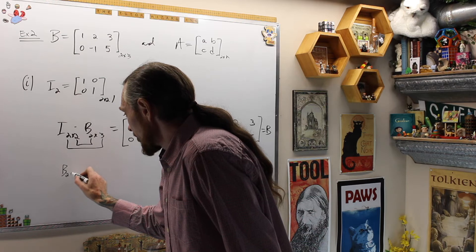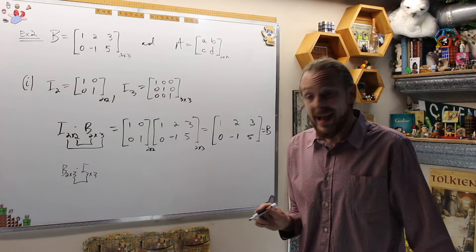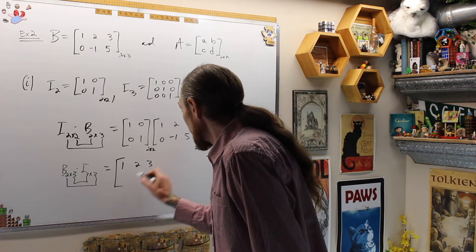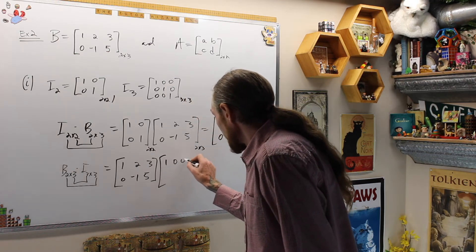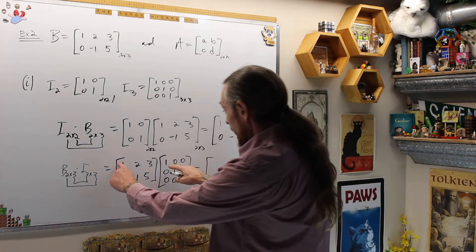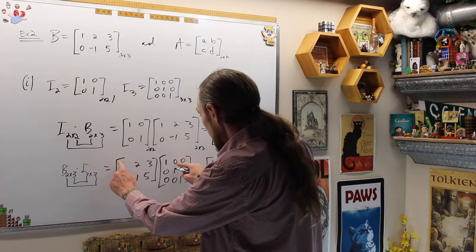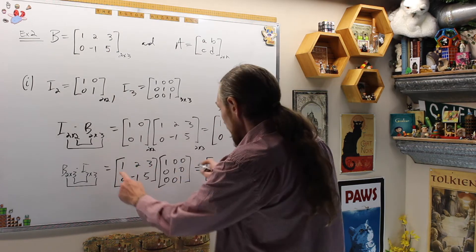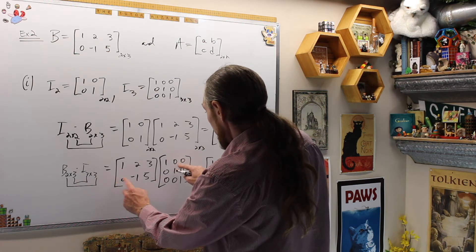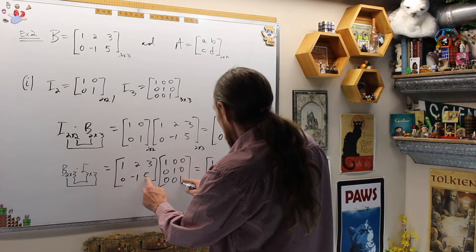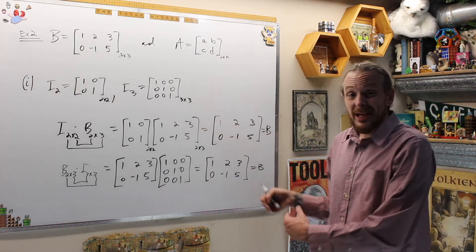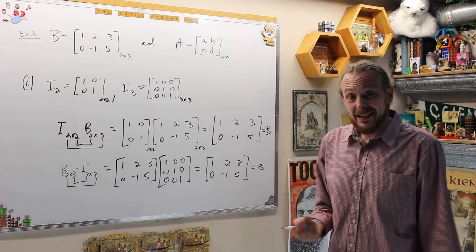Similarly, if we take B (2 by 3) and multiply it by I_{3x3}, the inside indices match and the outcome will be 2 by 3 again. B times I3 gives [1, 2, 3; 0, -1, 5] times [1,0,0; 0,1,0; 0,0,1], yielding 1+0+0=1, 0+2+0=2, 0+0+3=3, then 0+0+0=0, 0+(-1)=-1, 0+0+5=5, which is B again. So when multiplying non-square matrices, you use the identity of the appropriate size on each side, and they leave B alone.